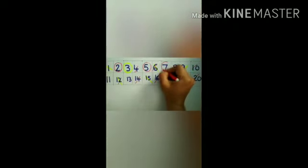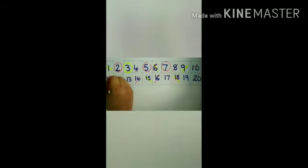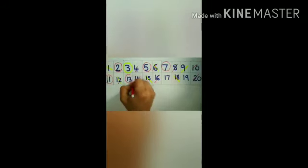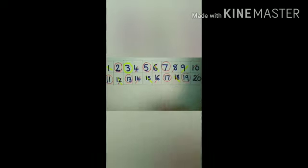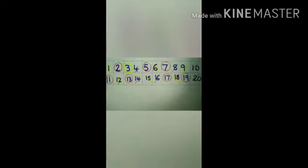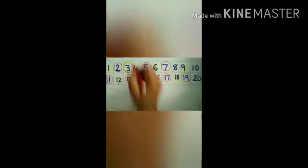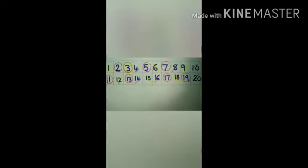And repeat the process. You will get 5. After cancelling all the multiples of 5, you will get 7. And then 11, 13, 17 and 19. So the prime numbers between 1 and 20 are 2, 3, 5, 7, 11, 13, 17 and 19.